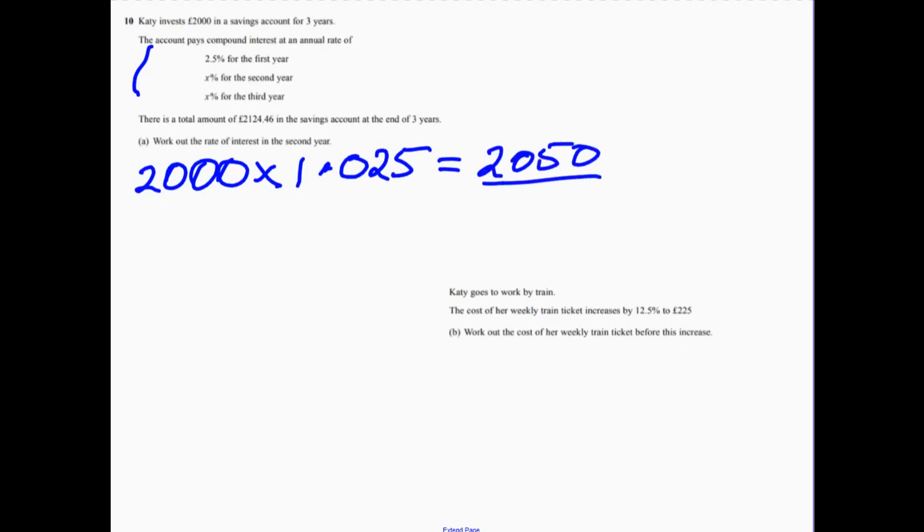Now what happens in the second and the third year? Well, it increases by a percentage, but it's repeated. In other words, it's multiplied by something squared. And we know that that equals 2124.46.